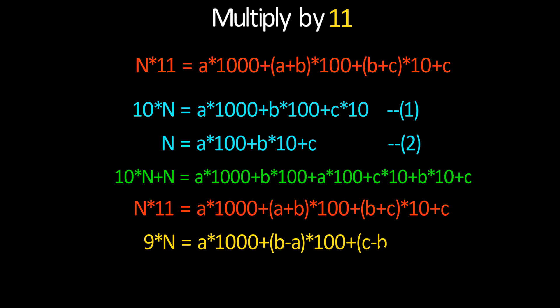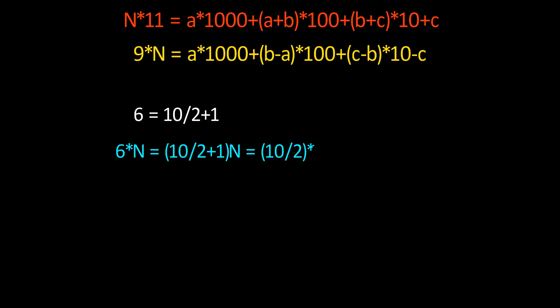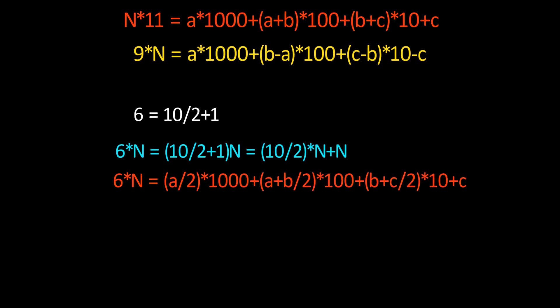Now the rule for 6: we know 6 equals half of 10 plus 1. When we multiply 6 with our number, 6 times n equals half of (10 plus 1) times n, which equals half of (10 times n plus n). After substituting the value of n we get our answer. Similarly for 4: 4 equals half of 10 minus 1, and after substituting we get our answer.